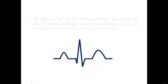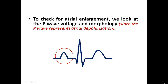To check for atrial enlargement, we look at the P wave voltage and morphology, since the P wave represents atrial depolarization. So everything we are going to discuss today is regarding the P wave, not the QRS complex or the T wave.